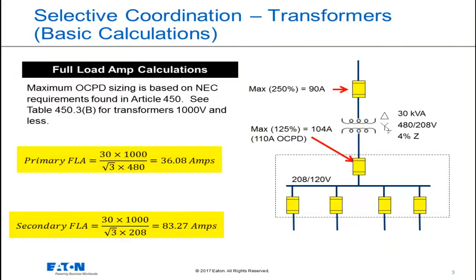The first step is to calculate the primary and secondary full load amps of the transformer and use that information to determine the maximum fuse size for the primary and secondary mains. This will be based upon National Electrical Code requirements. The primary full load amps is calculated as 36.08 amps at 480 volts. The secondary full load amps is calculated as 83.27 amps at 208 volts.